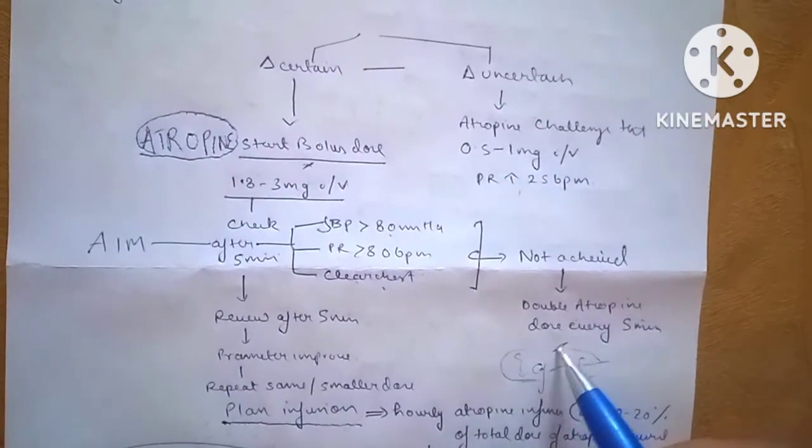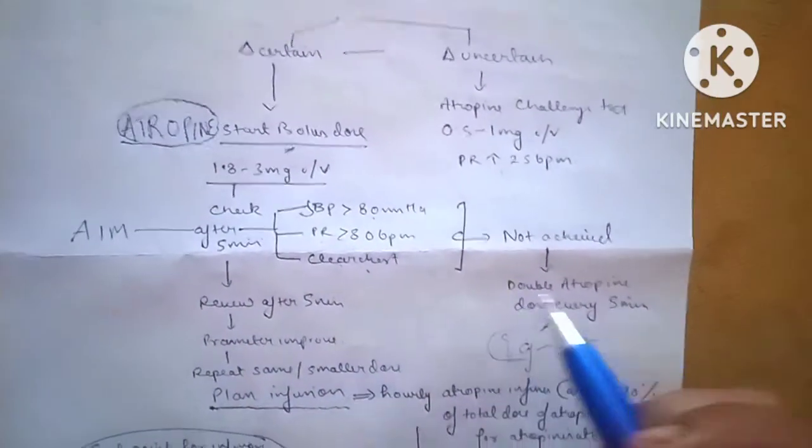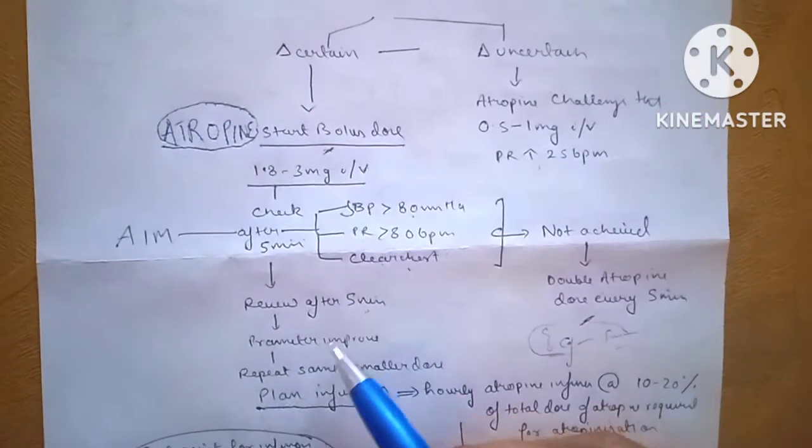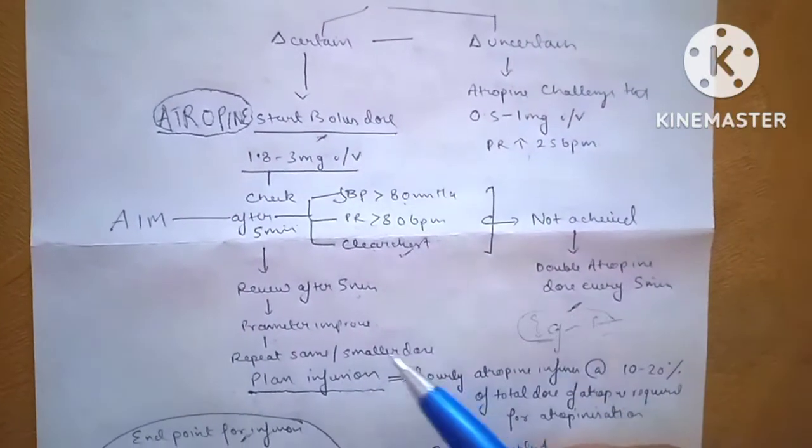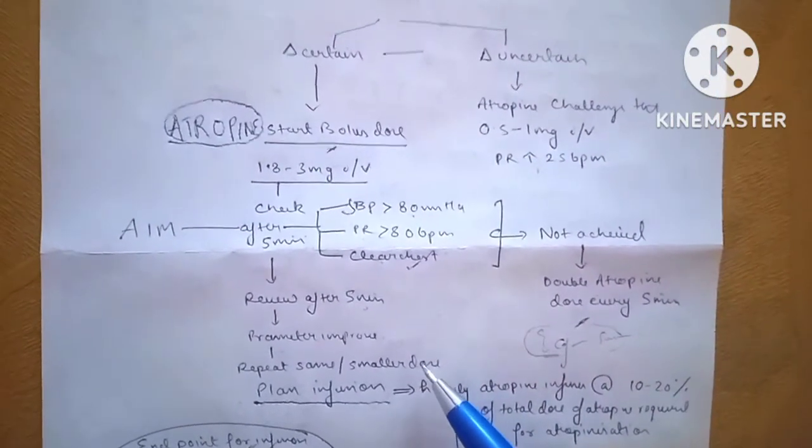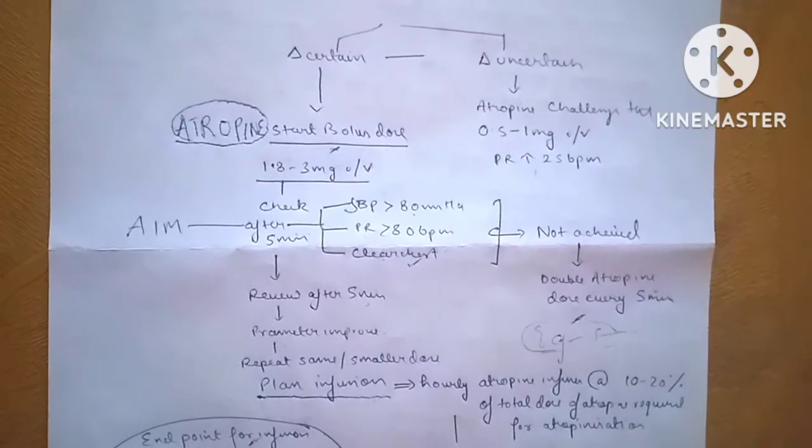We review after every five minutes, and if the parameters improve and we achieve our aim, we repeat the same or a smaller dose and we plan for infusion of atropine.